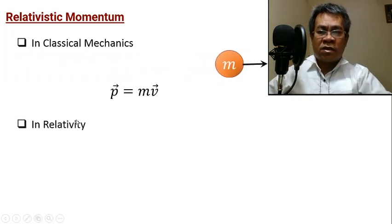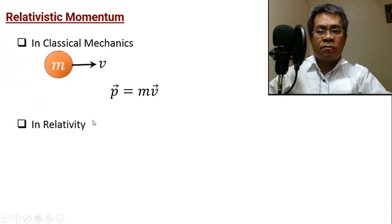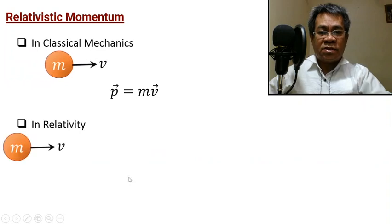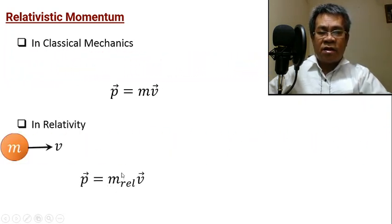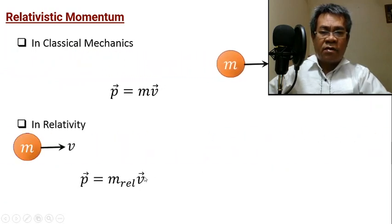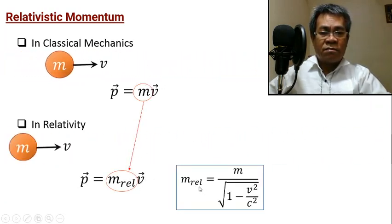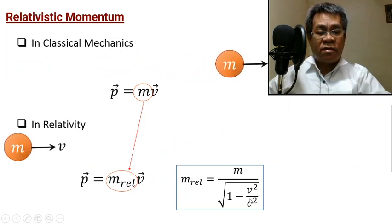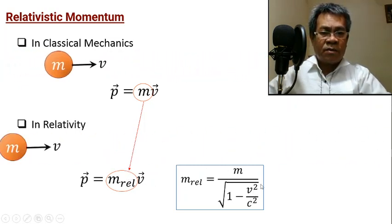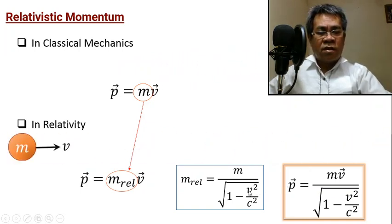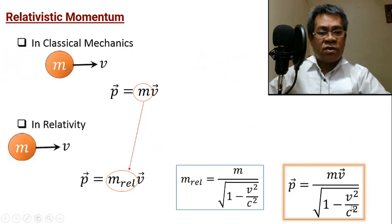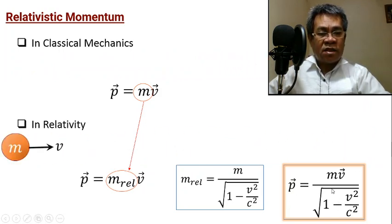What will happen if we have relativistic velocity? For very high speed, momentum is again relativistic. It is defined as the product of the relativistic mass multiplied by the velocity. The relativistic mass is equal to the rest mass over the square root of 1 minus V squared over C squared. So the relativistic momentum equals mass times velocity, all over the square root of 1 minus V squared over C squared.